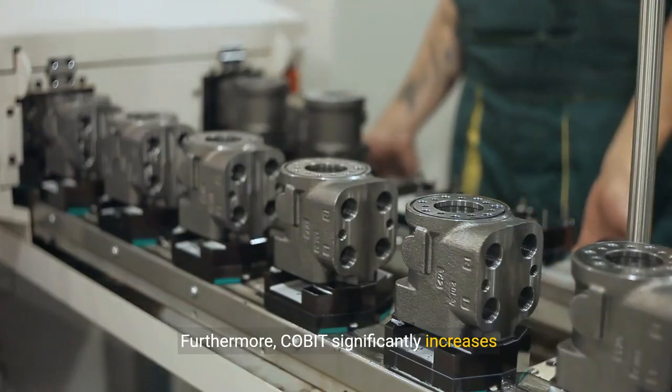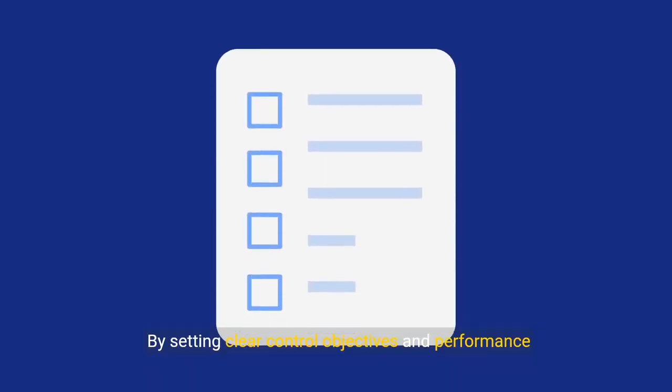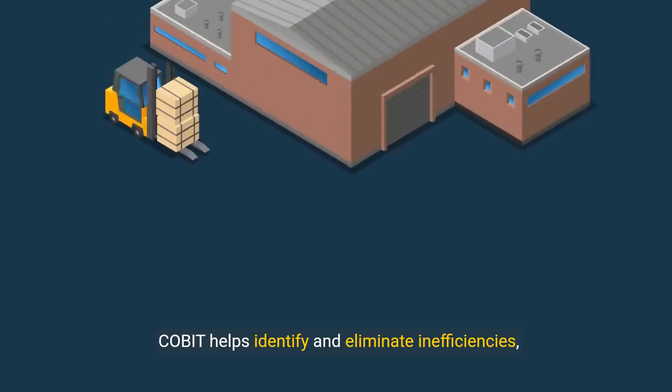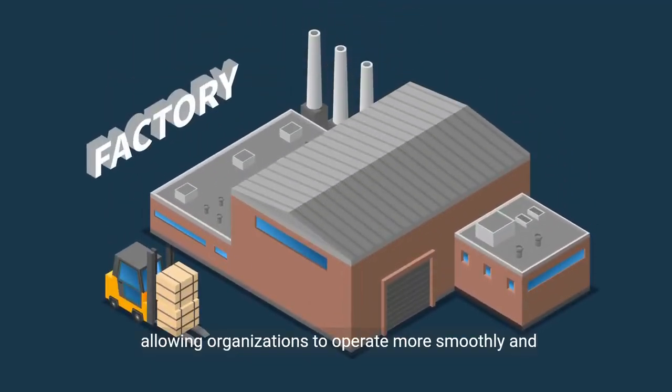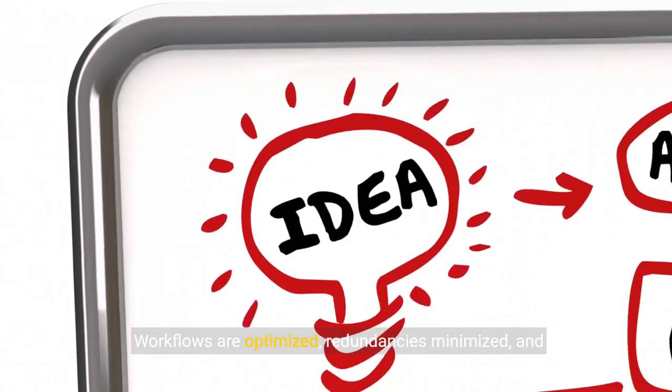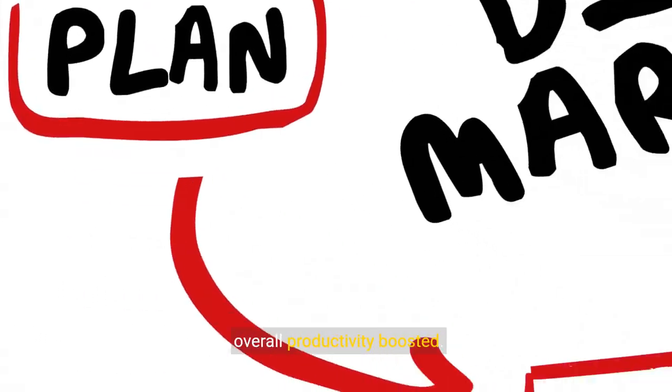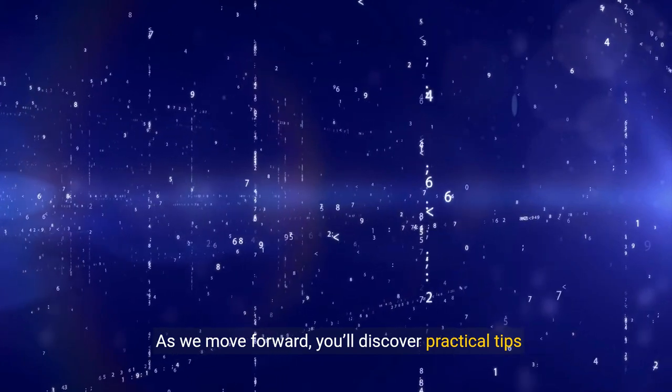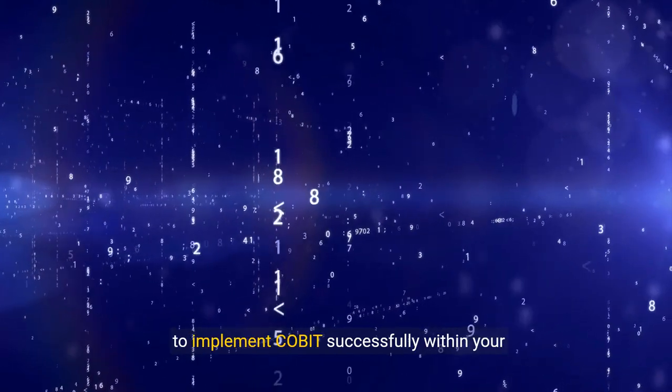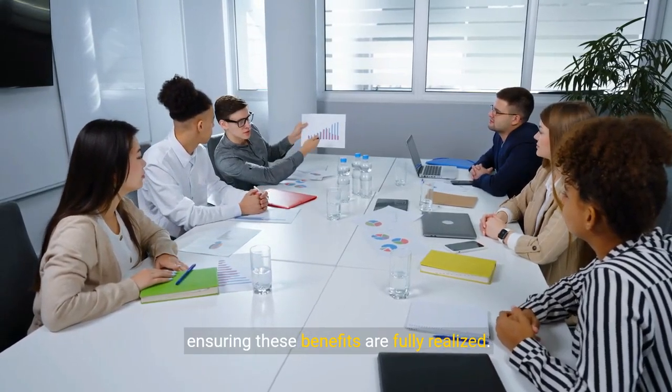Furthermore, COBIT significantly increases operational efficiency. By setting clear control objectives and performance measures, COBIT helps identify and eliminate inefficiencies, allowing organizations to operate more smoothly and cost-effectively. Workflows are optimized, redundancies minimized, and overall productivity boosted. As we move forward, you'll discover practical tips to implement COBIT successfully within your organization, ensuring these benefits are fully realized.